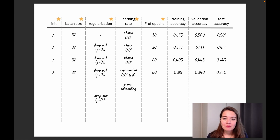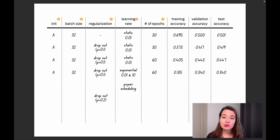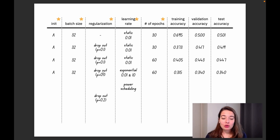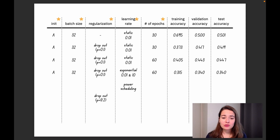I'd like you to try four different new approaches and note them down. I'd definitely want you to try power scheduling — I've shown how to implement it in the exercise section of the relevant module. Try power scheduling with the same values as the last run: initialization version A, batch size 32, regularization dropout 0.1, for 60 epochs, and see the results. I'd also like you to keep everything the same but increase the dropout rate to 0.2 with a static learning rate and see the results.